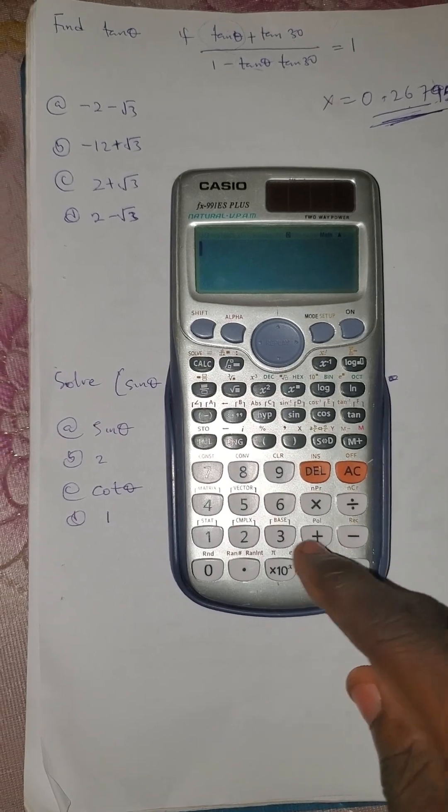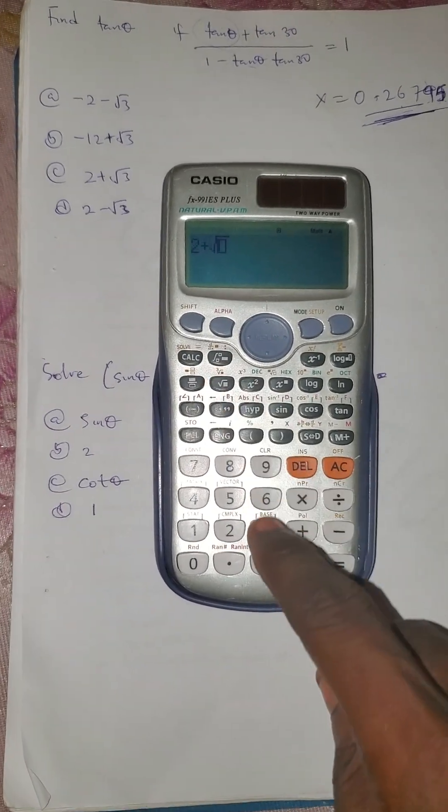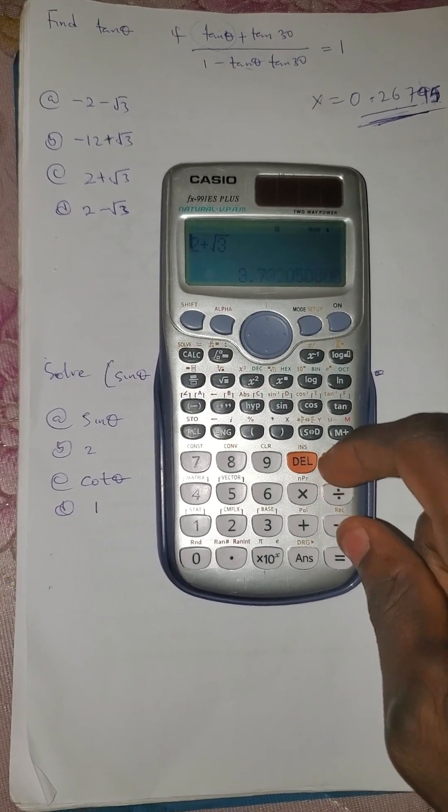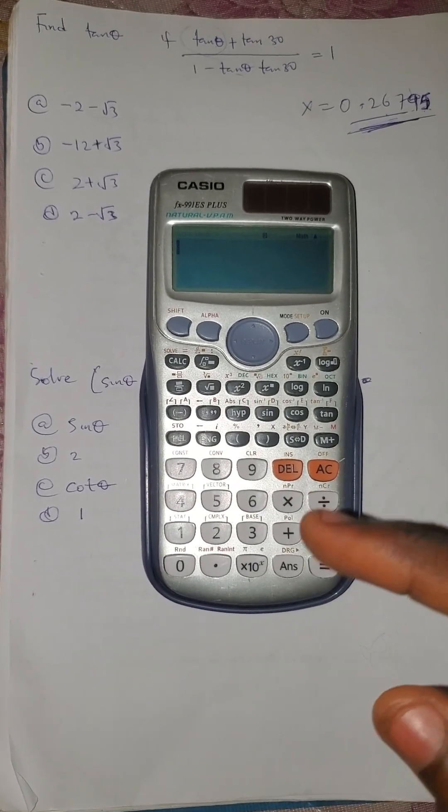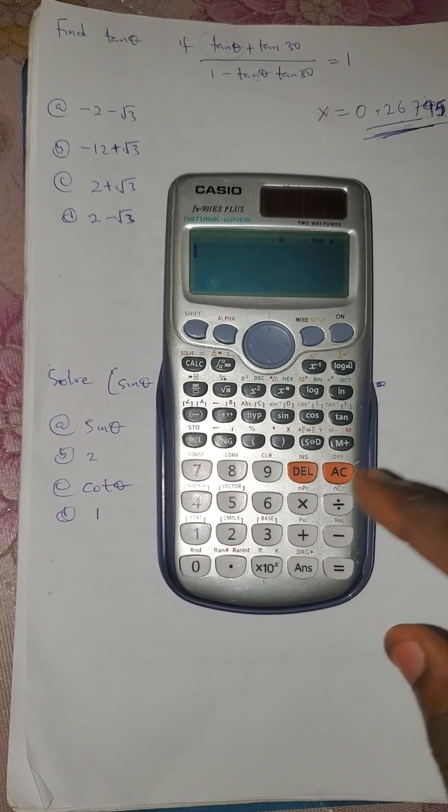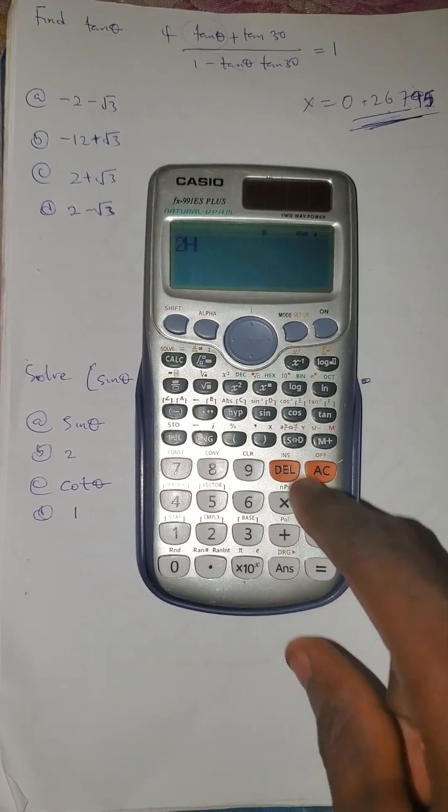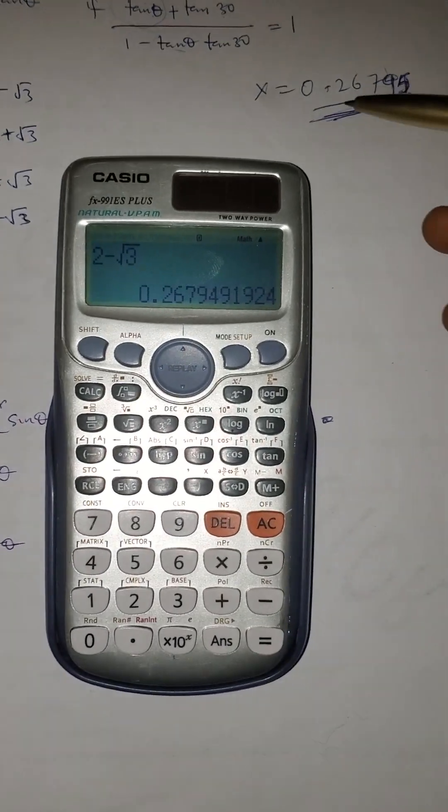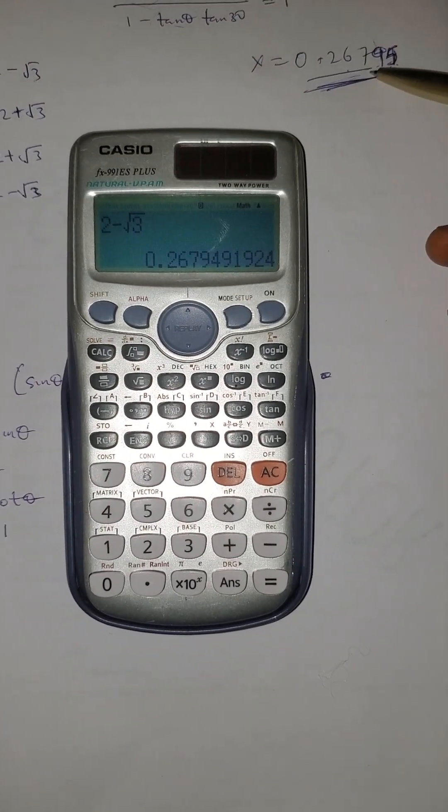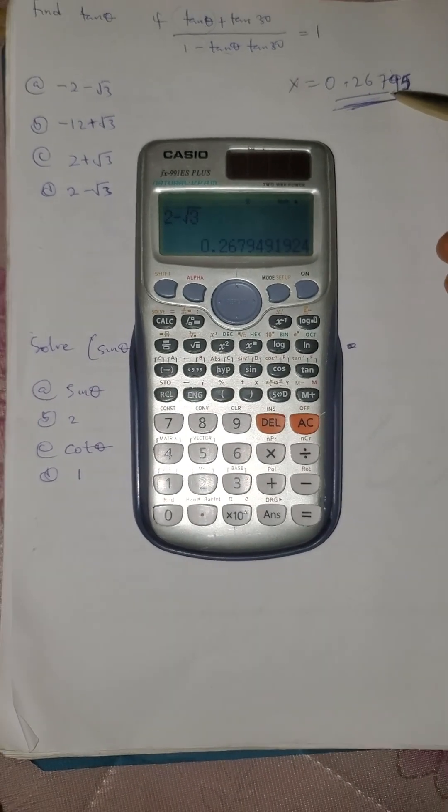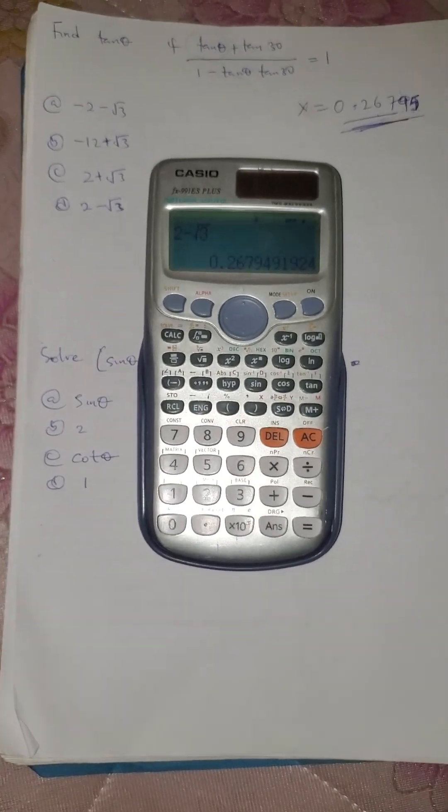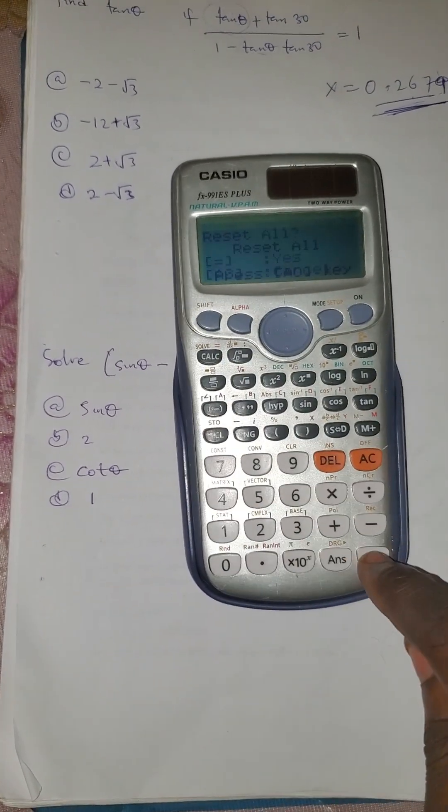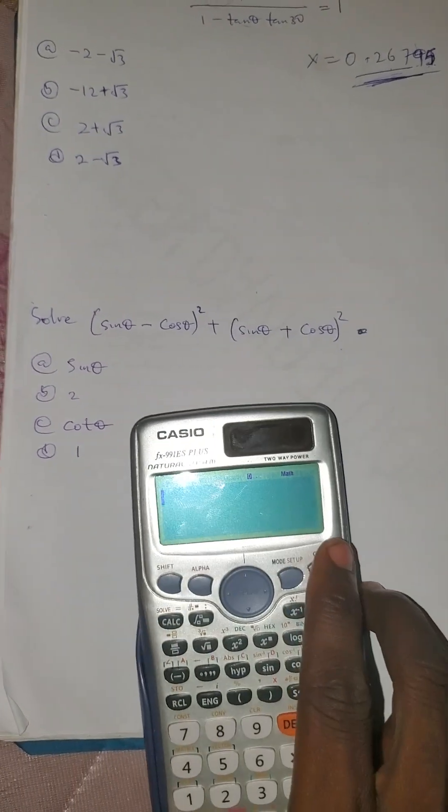The third option: 2 plus root 3. Press equals to express - it's not the same. I believe the last option should be the answer, which means you have 2 minus root 3. Press equals to express - that's it, it's the same thing, 0.26795 approximately. That is the correct answer.